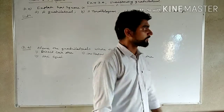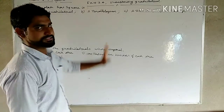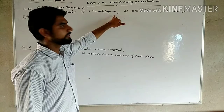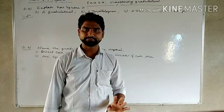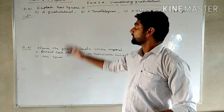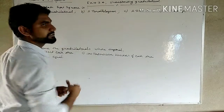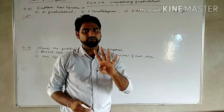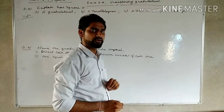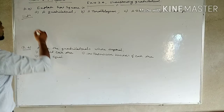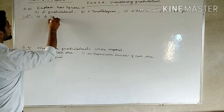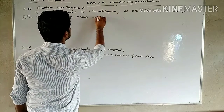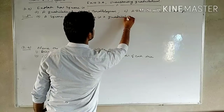Let's start Question Number 3: Explain how a square is a quadrilateral, a parallelogram, a rhombus, and a rectangle. So, according to the properties of a square, it has four sides. A bounded figure which has four sides is known as a quadrilateral. So, a square is a quadrilateral because it has four sides.